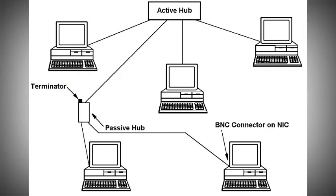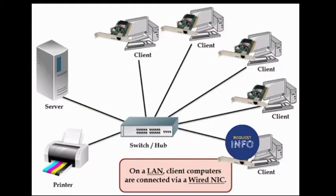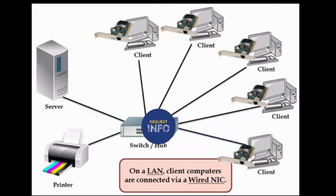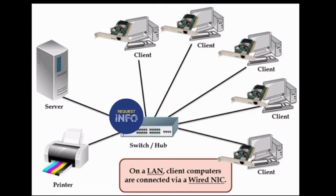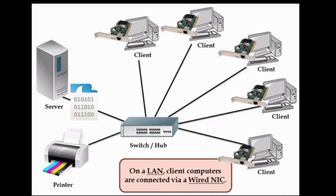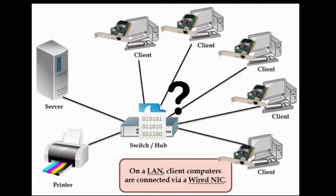This is the Hub, connected in a star topology. Let's see an example. A client makes a request through the Hub. The information is requested through the Hub. Because the Hub is a non-intelligent device, it is not valid for targeted delivery, and the other clients can still receive the data as well.